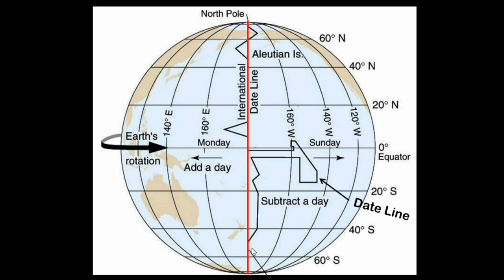Do you know why the dateline deviates from the 180th meridian? The answer lies in the fact that time continually changes as distances increase east or west of the prime meridian. Consequently, the date actually changes at the 180th meridian. The deviations in this line were made for political and economic reasons to accommodate the countries lying within those locations. For the geographic coordinate system, the 180th meridian is the only line that matters.